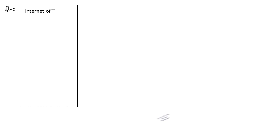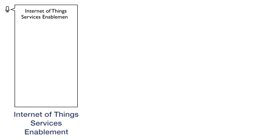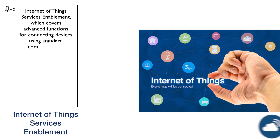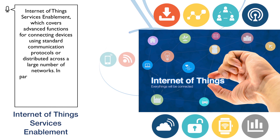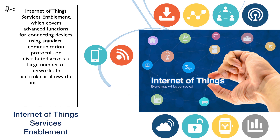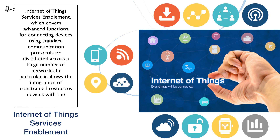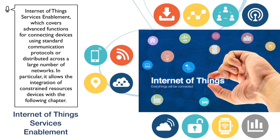Internet of Things Enablement, which covers advanced functions for connecting devices using standard communication protocols or distributed across a large number of networks. In particular, it allows the integration of constrained resource devices with the following chapter.